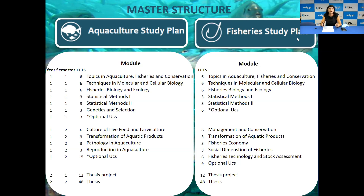The fisheries plan is similar to aquaculture in the first semester, except that in aquaculture you also have genetics and selection. In the second semester of the first year, the modules become more specific. For aquaculture, we cover culture of live feed and larvae culture, transformation of aquatic products, pathology and reproduction in aquaculture, plus 15 credits of optional units.